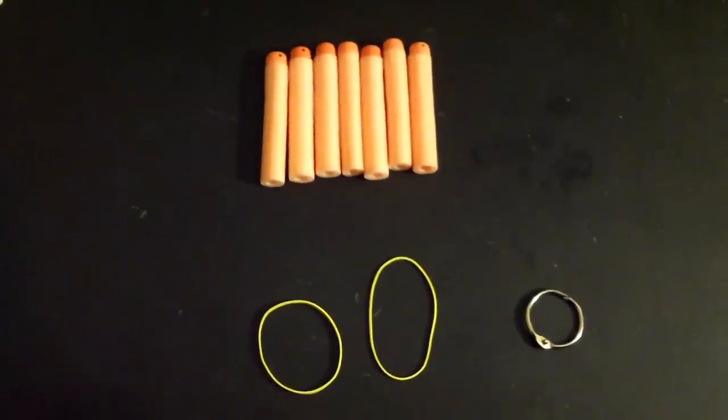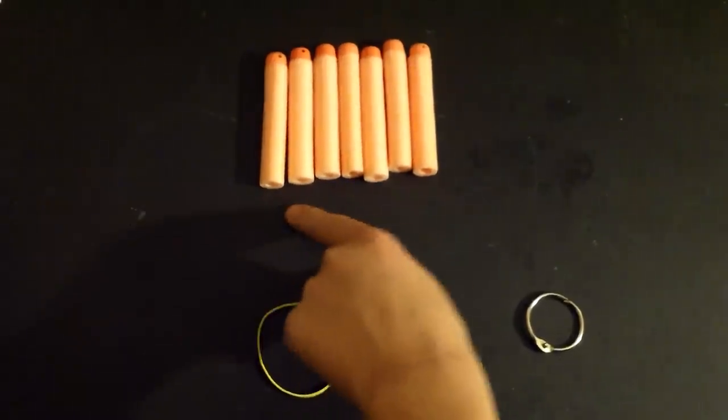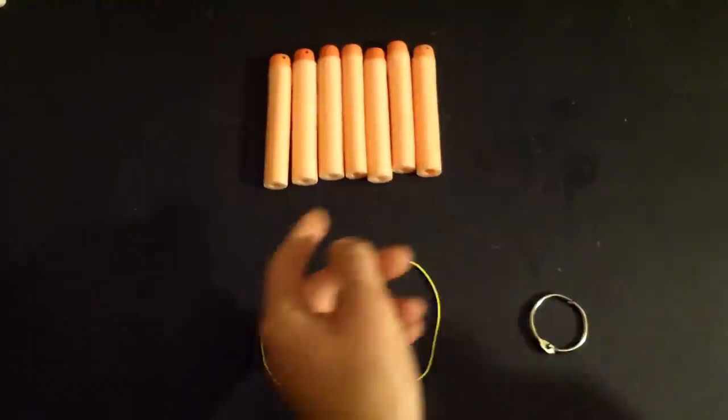Hello YouTube, I'm ElementalCore and today I'll be showing you how to make a Nerf Holy Hand Grenade. First you need 7 orange tipped Whistlers.